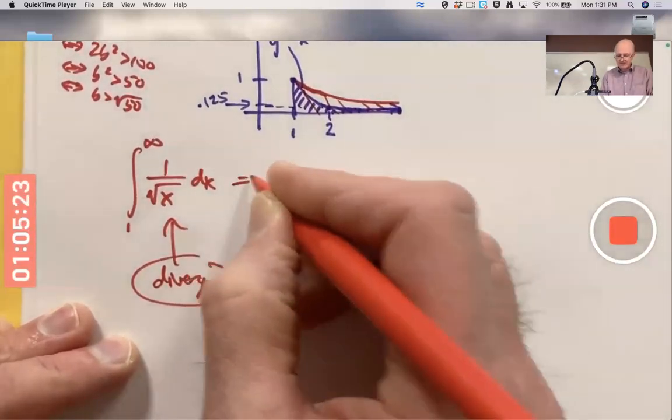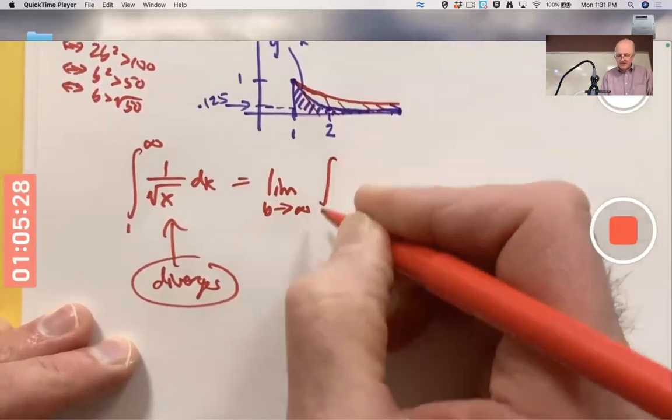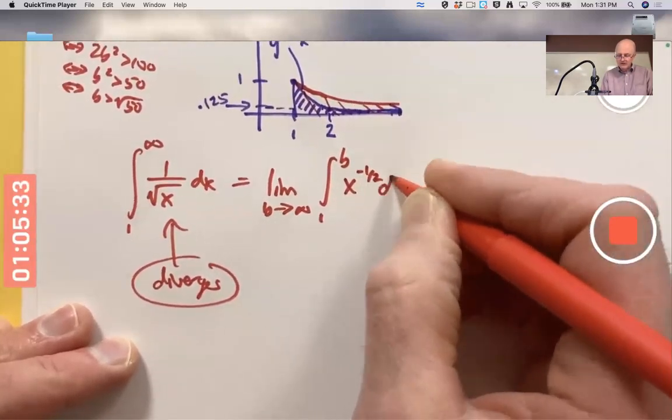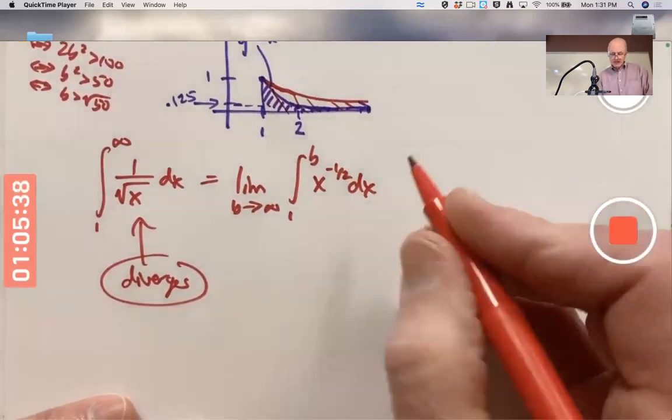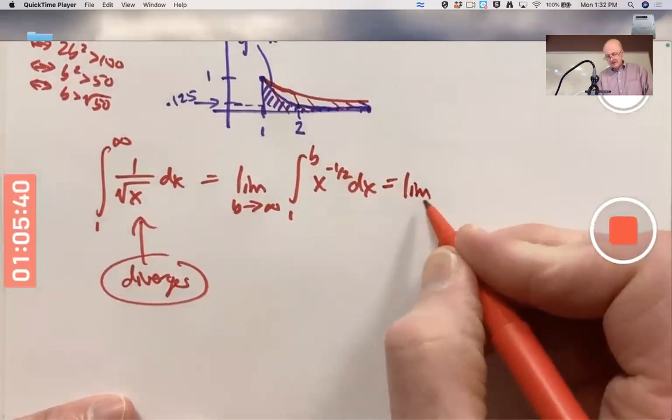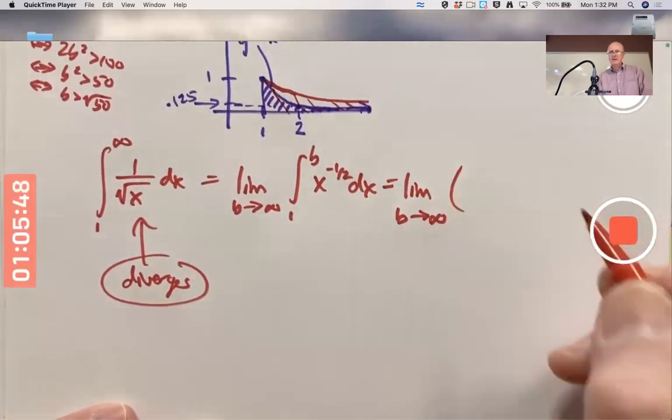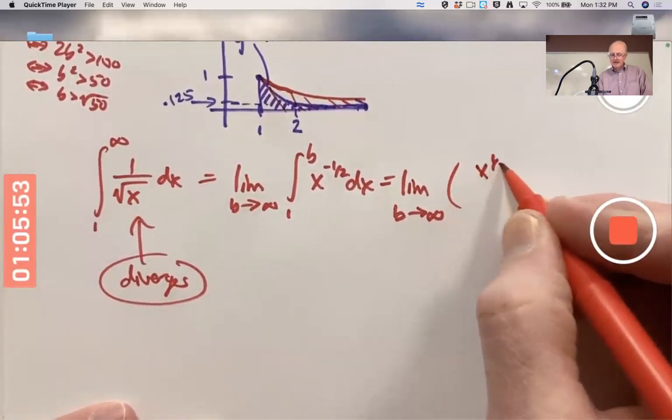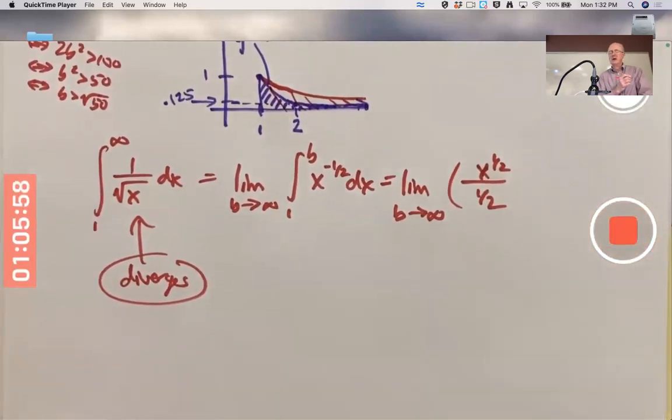Let's prove that now by a calculation. By definition, this is the limit as b goes to infinity of the integral from 1 to b of this function, which I will write as x to the negative 1 half power. Just carry the limit sign along. Make sure you do only take the limit at the very end. This is very important to get full credit. Antiderivative of x to the negative 1 half as x to the positive 1 half divided by 1 half. Dividing by 1 half is the same as multiplying by 2.